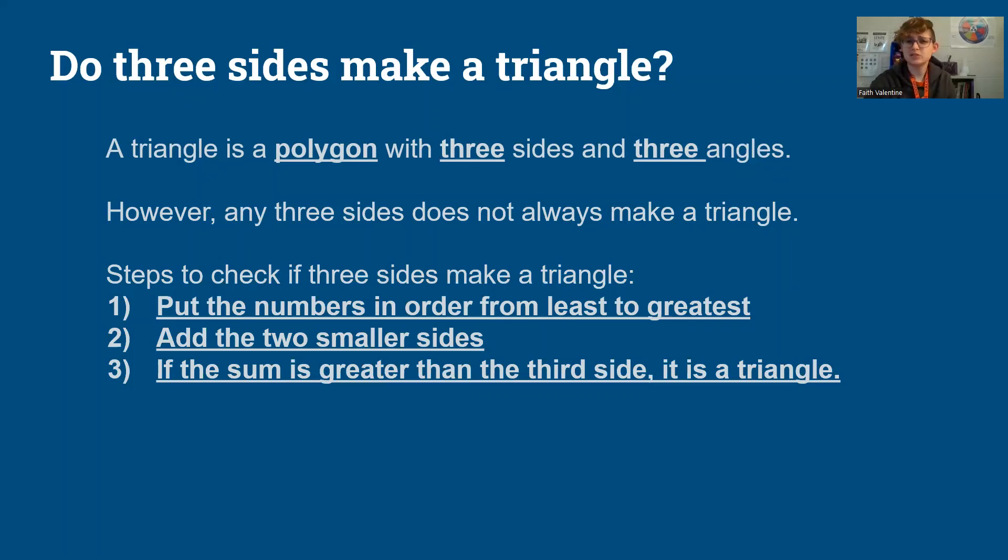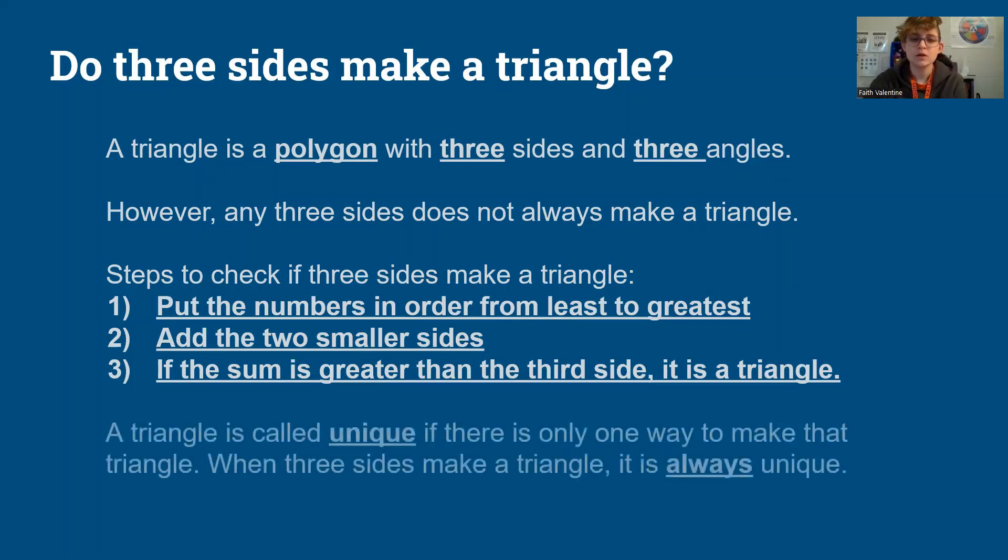Now what does this have to do with being unique? We call a triangle unique if there's only one way to make that triangle. This is a seventh grade standard. There are many different theorems or rules that prove if a triangle is unique. But because this is tailored for seventh grade math or middle school age range, we're focusing on just three sides.